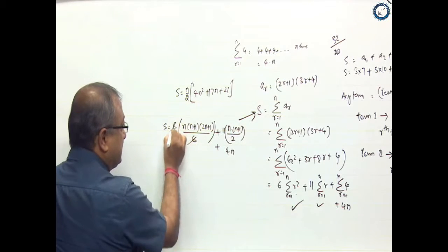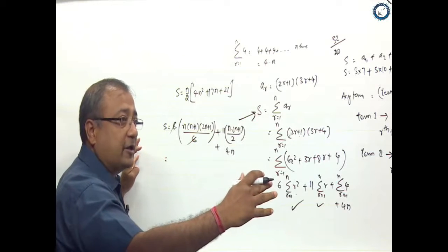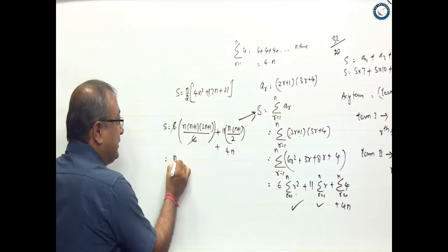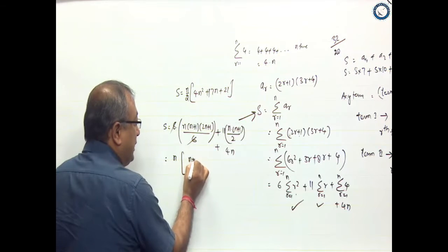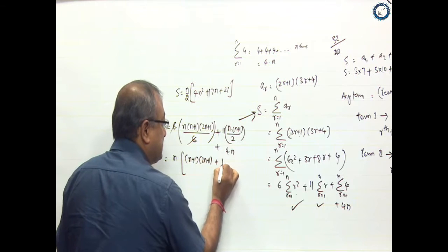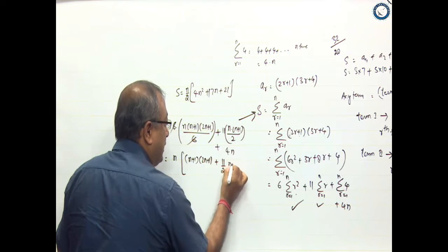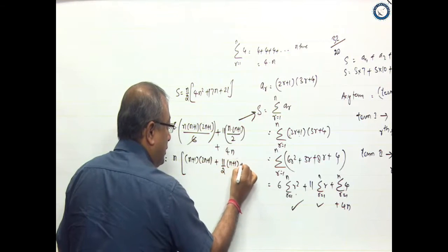Now, 6 and 6 will get cancelled. What we will do - we will not solve and make a cubic equation or anything like that, we will take n common. So this will be (n+1)(2n+1) plus 11/2(n+1) plus 4.